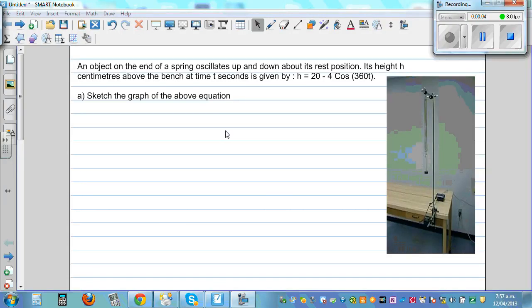Let's look at an application of trig graphs. An object at the end of a spring oscillates up and down above its rest position. Its height h centimeters above the bench at time t seconds is given by this equation: h equals 20 minus 4 cos 360t. Or let me write like this: minus 4 cos 360t plus 20.